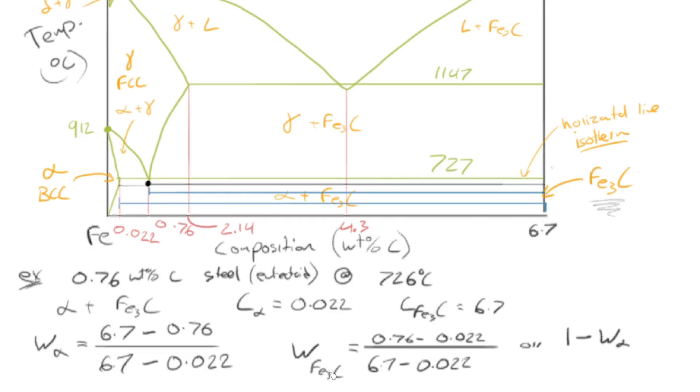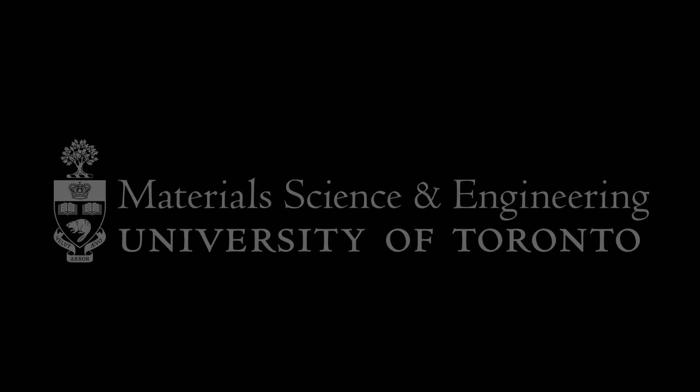so that's a quick look at the iron carbon phase diagram with a little example calculation showing how we can use the lever rule to determine how much of one phase there is and also how we can use the composition axis to give us the composition of each phase. Alright, thanks a lot. Thank you.